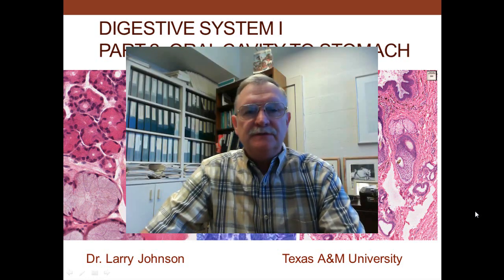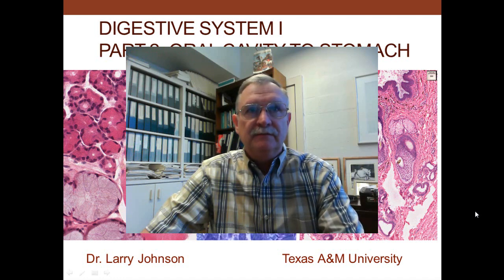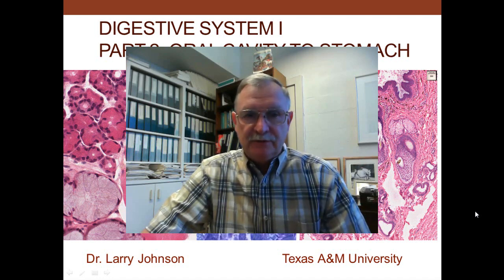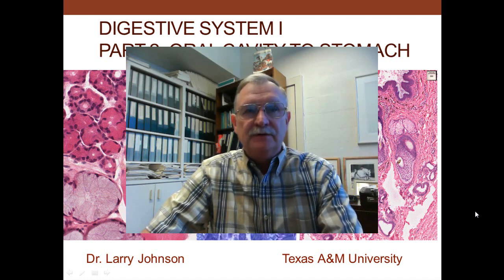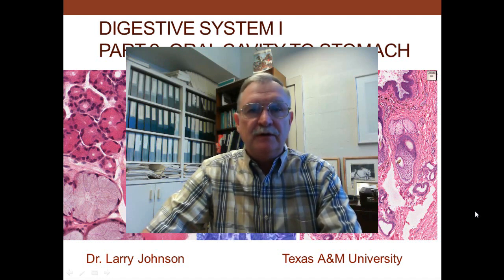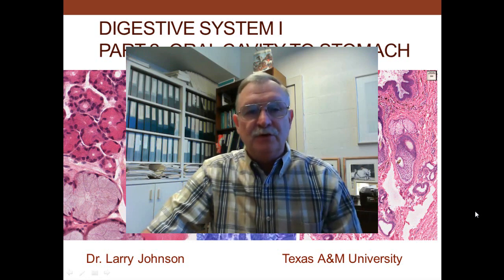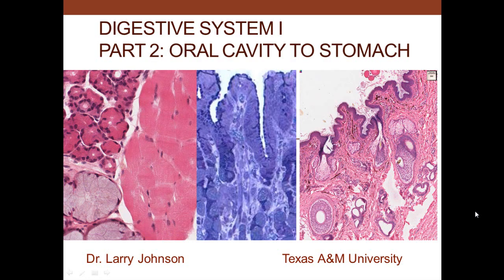Today we're going to talk about the digestive system. We have the digestive system divided into two divisions. The first division is the gastrointestinal tract itself, and the second division — digestive system two — will be on accessory digestive organs. In part one, digestive system one, we have three parts: part one has to do with the cells of the digestive system, part two with the oral cavity, esophagus and stomach, and part three with the small and large intestine.